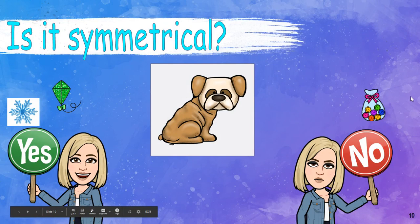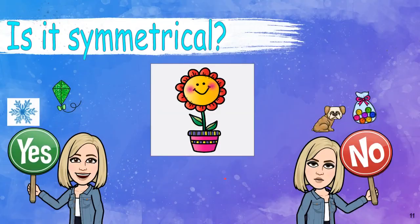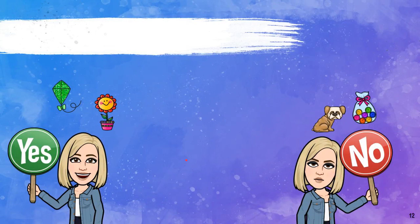No, because the candies are different colors all throughout the bag. So if we folded that in half, they would not be the same. What about this dog? If I put a line right here, would he be the same on both sides? No, but I could put a line down his face and it would be the same — but not the whole dog. What about this flower? If I put a line down the middle, would it be the same? Yes.